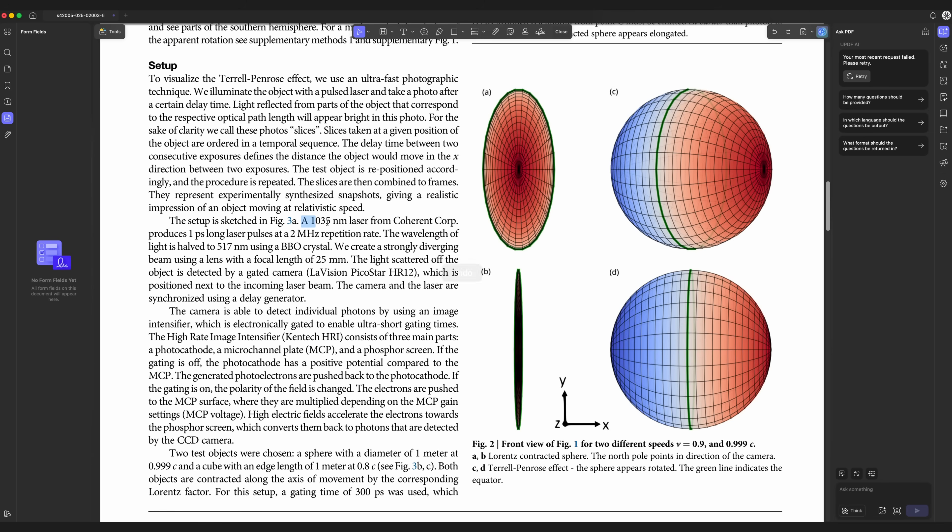Similar technique can be used to virtually slow down the light itself, providing you have an ultra fast camera with gating times around 300 picoseconds. So they used a 1035 nanometer laser from Coherent Group, producing 1 picosecond long laser pulses at 2 MHz repetition rate. The wavelength is then halved to 570 nanometers using BBO crystal. And then the beam is going through a strongly diverging lens with a focal length of 25 millimeters.